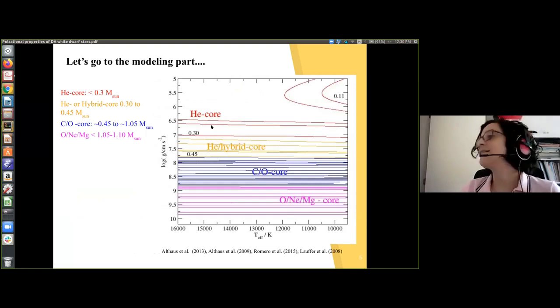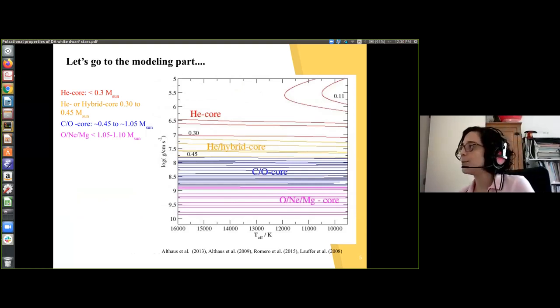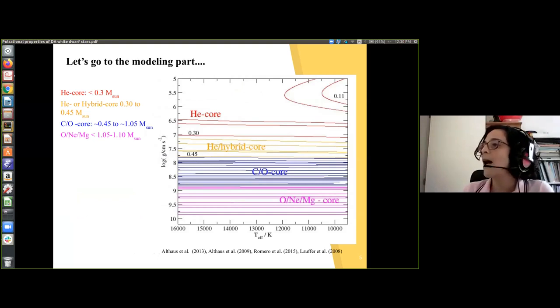One important thing about the ZZ Cetis is that the instability strip is pure. This is something that is well established now. That means that all the DA white dwarfs that get into these effective temperature regions will show pulsations. So studying these ZZ Cetis will give us information about all the DAs in general. The instability strip goes from 14,000 to 9,000 ish. But one important thing is that these effective temperature range is dependent on mass. For the massive ones, the instability strip is hotter, while for the lower mass ones is cooler.